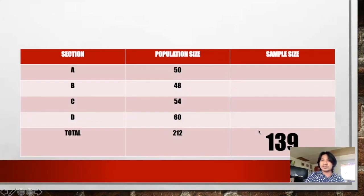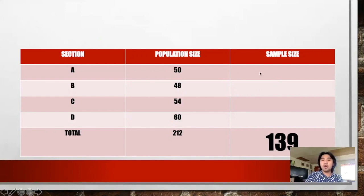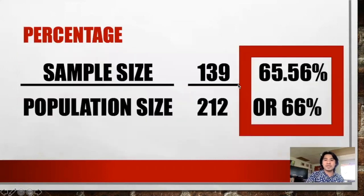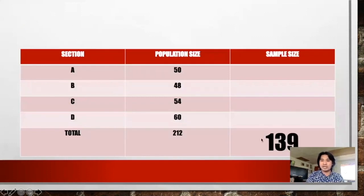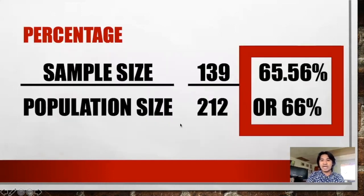Now the question is: how are we going to know how many students per section will answer our survey questionnaire? We will solve the percentage per section. Our sample size is 139 and our total population size is 212. So we divide 139 over 212, which gives us 65.56%, or approximately 66%.